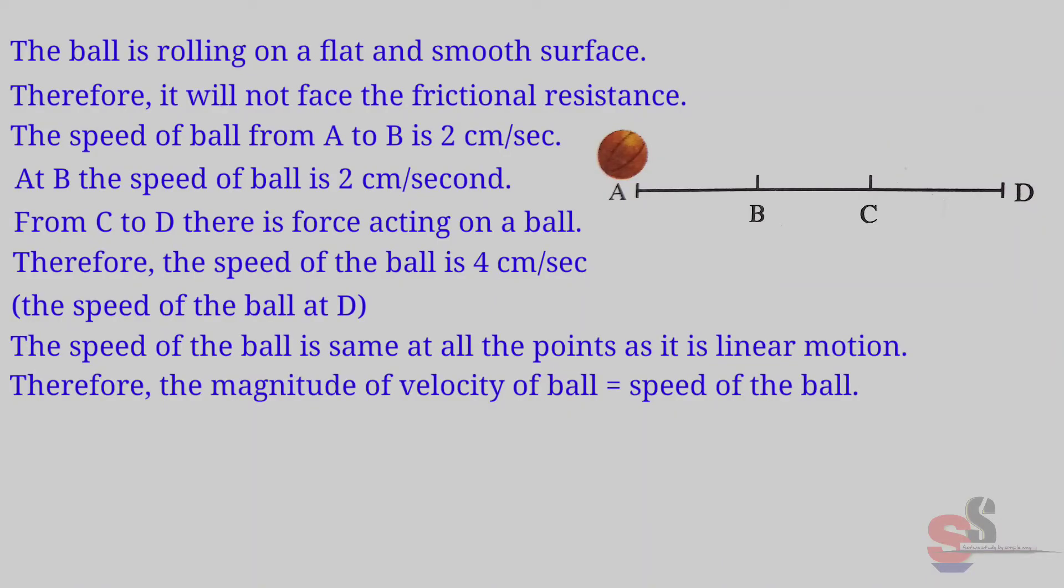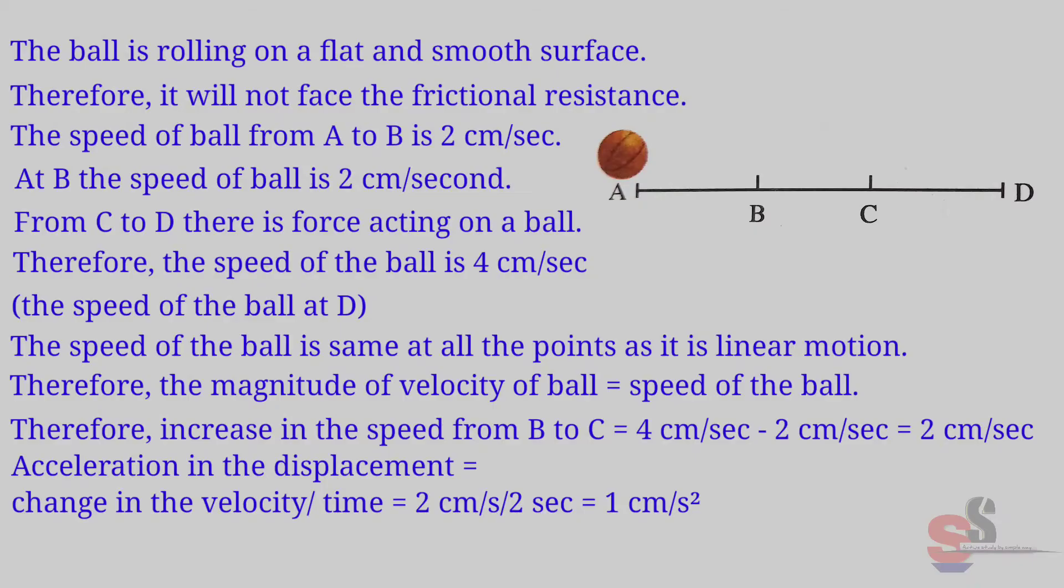Therefore, the magnitude of velocity of the ball is equal to the speed of the ball. Therefore, increase in the speed from B to C is equal to 4 cm per second minus 2 cm per second is equal to 2 cm per second. Acceleration in the displacement is equal to change in the velocity upon time. Now, change in the velocity is 2 cm per second upon 2 seconds is equal to 1 cm per second square. Thus, the acceleration between B to C is equal to 1 cm per second square.